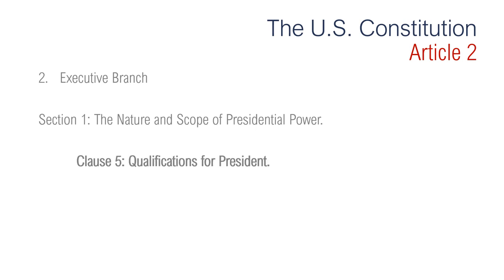Section 1, Clause 5 is regarding qualifications for president. It says no person except a natural born citizen, or a citizen of the United States at the time of the adoption of this Constitution, shall be eligible to the office of president. Neither shall any person be eligible who shall not have attained the age of 35 years and been 14 years a resident within the United States. The president must be a natural born citizen, at least 35 years of age when taking office, and have been a resident within the United States for at least 14 years.